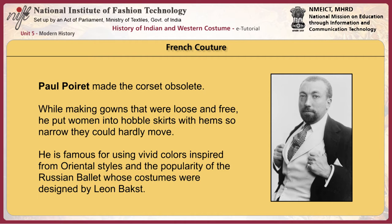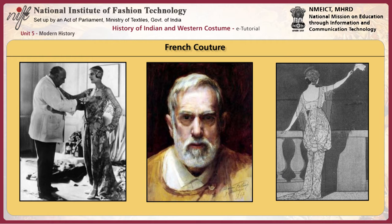Paul Poiret made the corset obsolete. While making gowns that were loose and free, he also put women into hobble skirts with hems so narrow they could hardly move. He is famous for using vivid colors inspired by oriental styles and the popularity of the Russian ballet, whose costumes were designed by Leon Bakst.